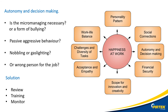Autonomy and decision making. Is the micromanaging necessary? Am I being micromanaged? Am I micromanaging somebody? Am I the wrong person for the job, or have I hired the wrong person for the job? Or is my unconscious bias guiding my actions? A solution to autonomy and decision making problems is to review the performance of staff by looking at their work plans and KPIs, implement training when necessary, and monitor their activities.